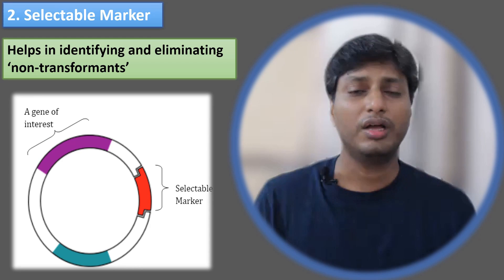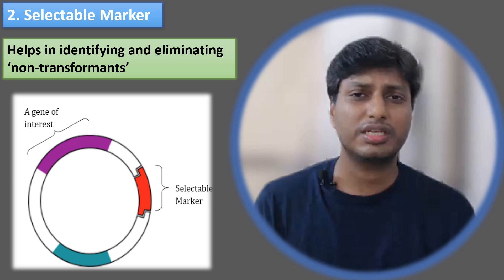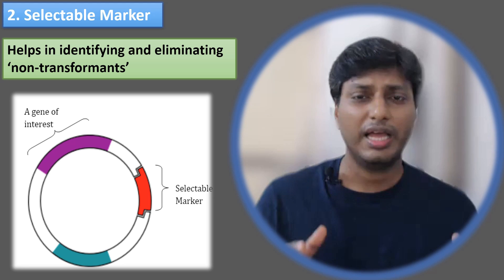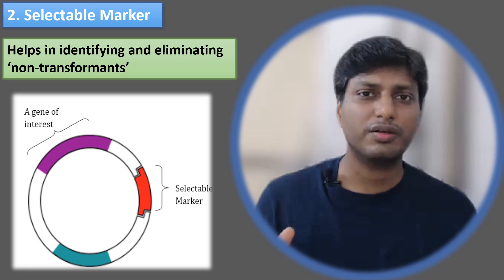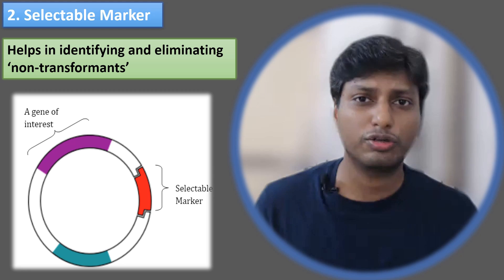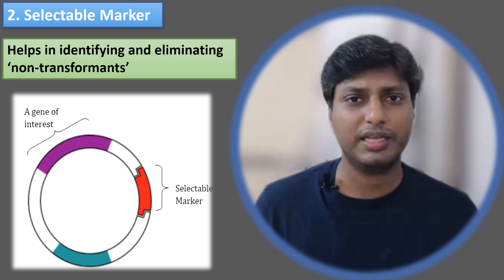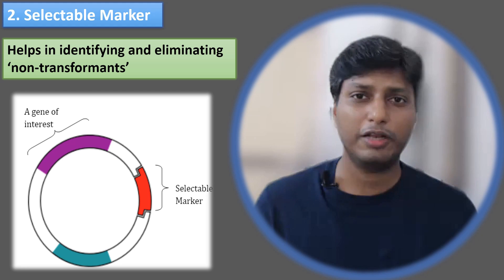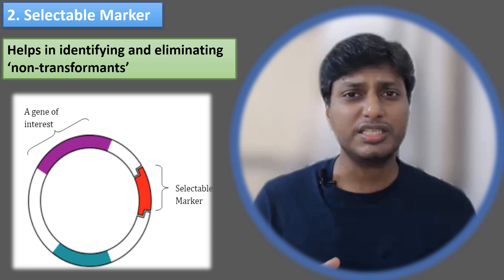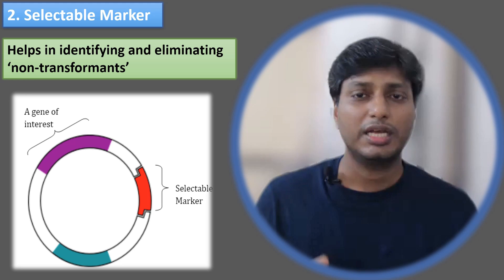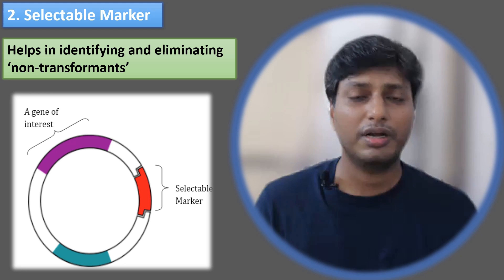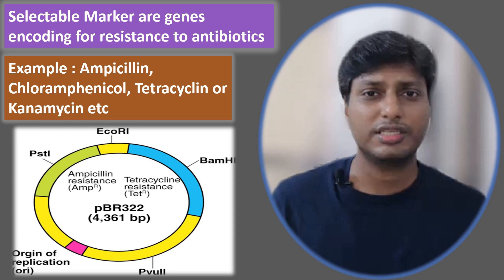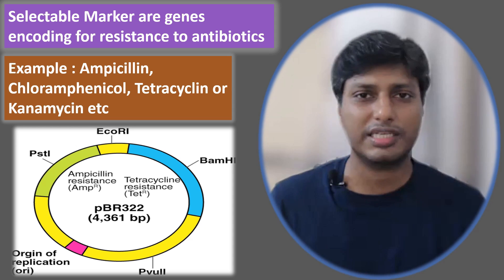The second most important part of a cloning vector is nothing but a selectable marker. A selectable marker is nothing but a gene which helps us to find out whether the bacteria has successfully taken up the plasmid or not. Just imagine that once we have transferred plasmid inside the bacteria and we allow the bacteria to multiply on a suitable medium — can we directly identify the bacteria by looking at them, whether they have successfully taken up the plasmid? There should be a method by which we can find out which bacteria has taken up the plasmid. As far as PBR322 was concerned, the selectable marker genes were the antibiotic resistant genes, resistant to antibiotics like ampicillin, chloramphenicol, tetracycline, etc.